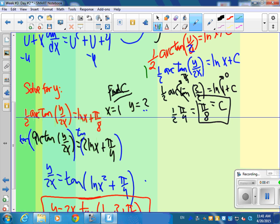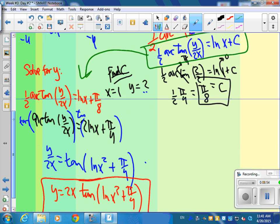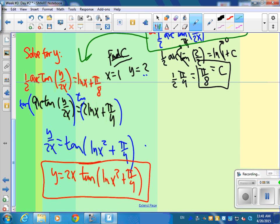So when I put that into this one over here, I'm going to get 1 half arctan y over 2x equal natural log of x plus pi over 8. Multiply everything by 2. So I get 2 natural log of x pi over 4. And I take the tangent of both sides. Tangent of the arctan. Tangent of y over x is y over 2x tangent of this. And I multiply both sides by 2x. So I'll get y is equal to 2x tangent ln of x squared plus pi over 4.